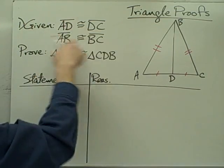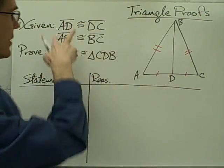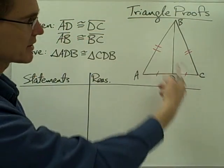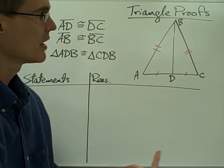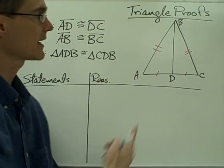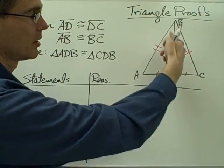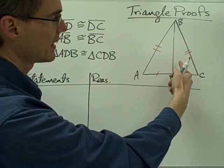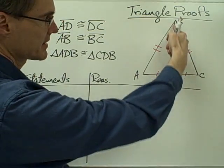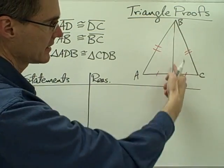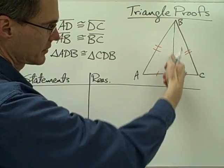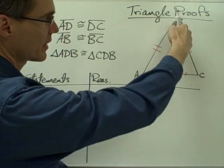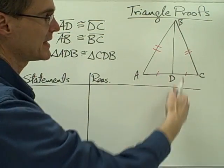This is all the information that we're given in our given statement, but I can actually see there's one other piece of information I can mark on my triangle — in particular, this common side, this side that's common to both of these two triangles, which is segment BD.